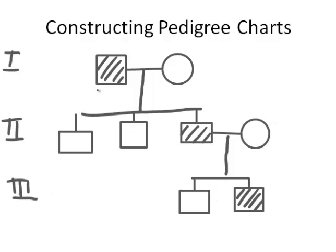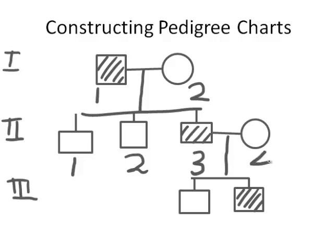We assign each individual from each generation a number starting at one. So in the second generation we have one, two, three, and four; in the final generation the two boys are one and two. You may also occasionally see the older style where numbering continues across generations: one, two, then dropping to the second generation as three, four, five, six. Newer textbooks use Roman numerals to indicate the generation and numbers to indicate the individual.